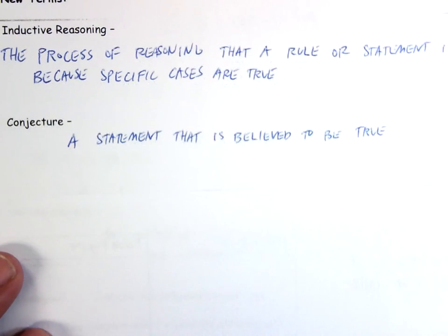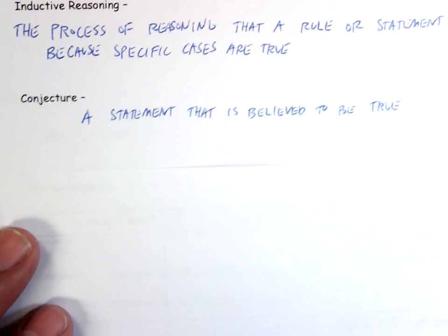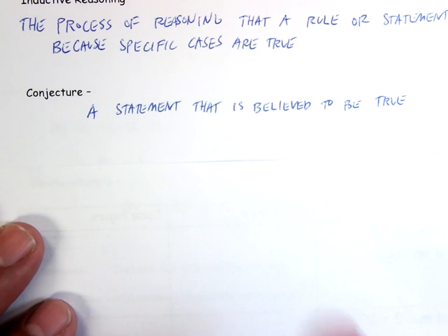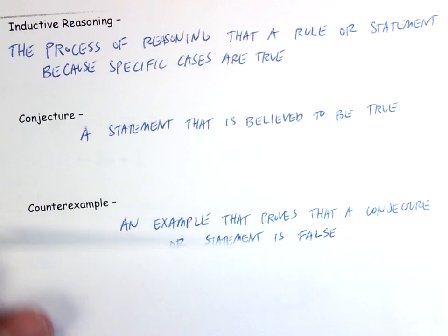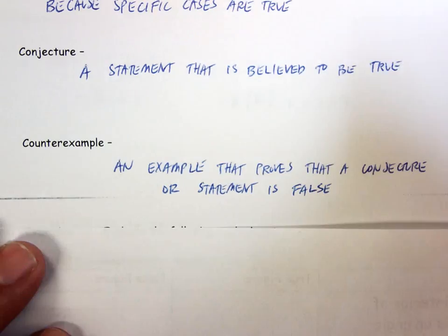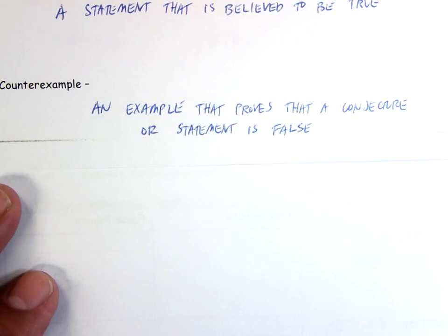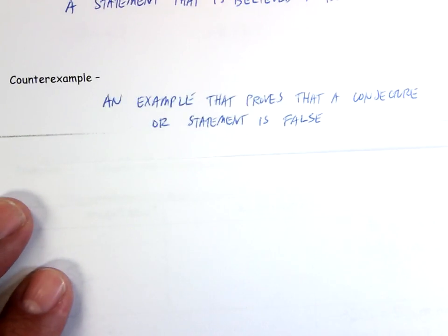Another vocab word: conjecture. A conjecture is a statement that is believed to be true. Please pause to get these definitions down. Know what these words mean — vocabulary is very important in this class.